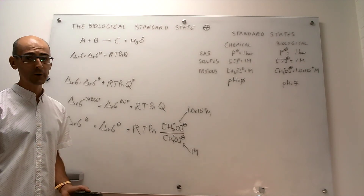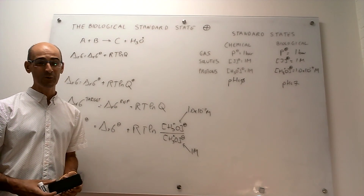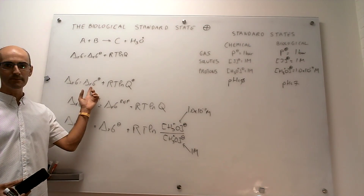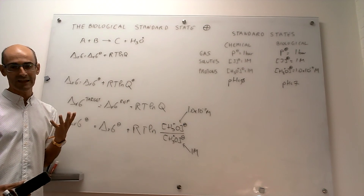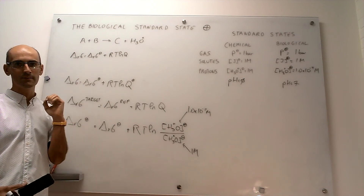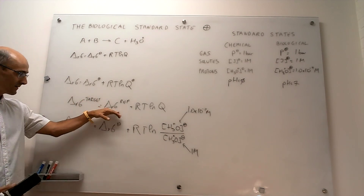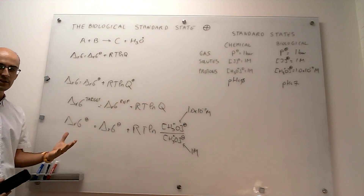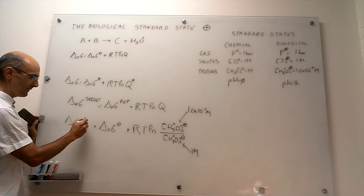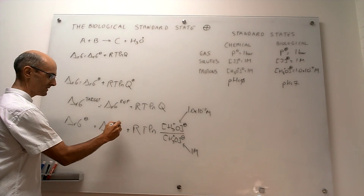To wrap up, we can reverse the question: suppose you are provided the reaction Gibbs energy at the biological standard state and your goal is to calculate the reaction Gibbs energy at the chemical standard state. In that case, you can still use this same approach — the only thing that changes is that your states are flipped. Now your target is the chemical standard state, and your reference is the biological standard state, which is the number you know.